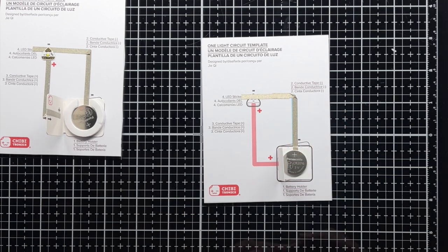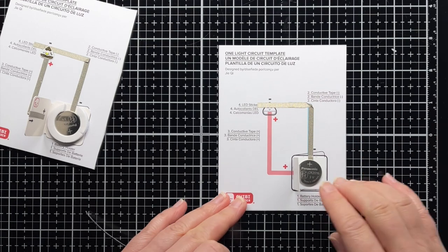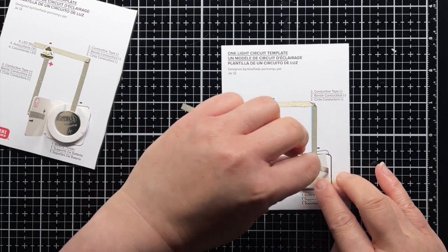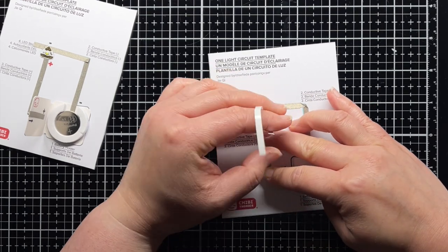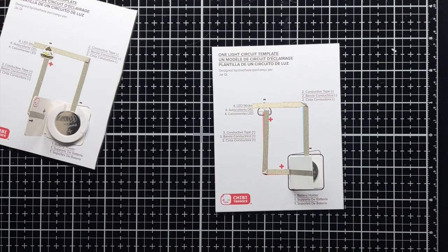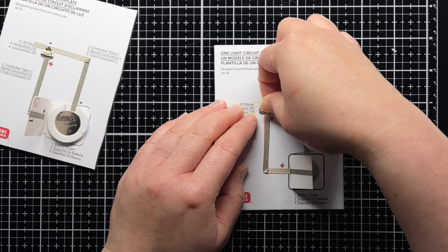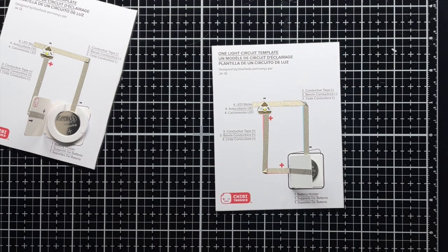Next I adhere my battery inside the holder with the positive side facing up. Then I add tape to the red positive line of my circuit.